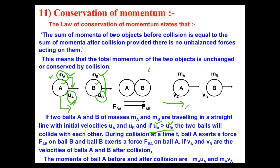When they are traveling in a straight line, the two balls will collide at some particular time. During the collision, ball A exerts a force on ball B, and at the same time ball B exerts a force on ball A. The force A exerts on B is called fAB, and the force B exerts on A is called fBA.